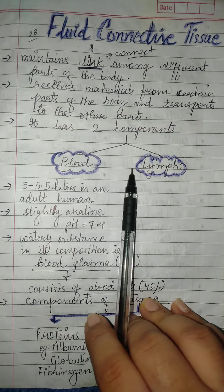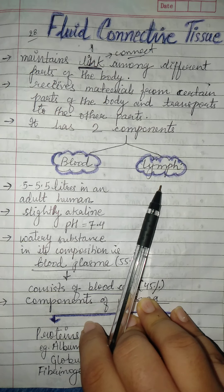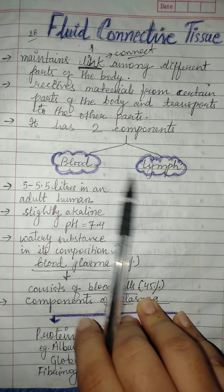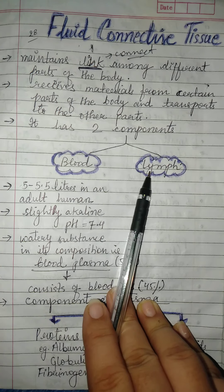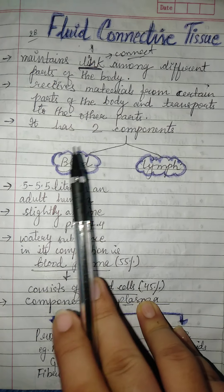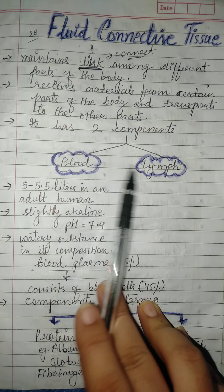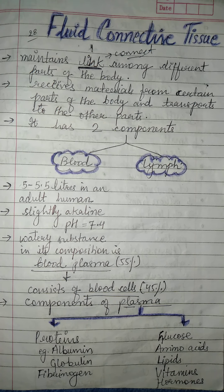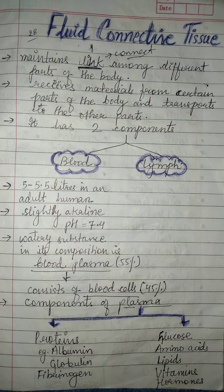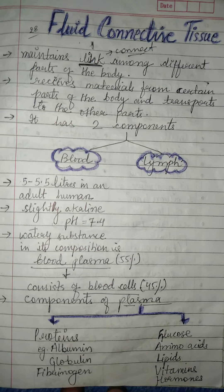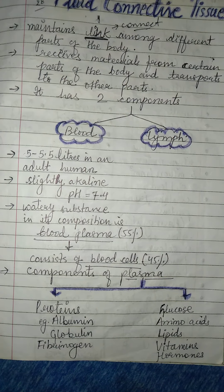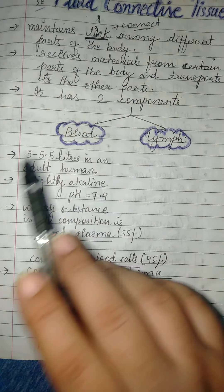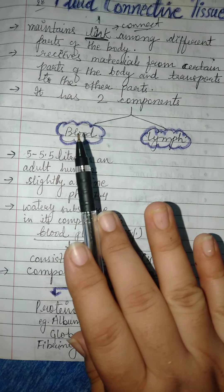So fluid connective tissue has two components — two types: one is blood and another is lymph. Both blood and lymph are fluids, but both have different colors. We will discuss them one by one. First we will proceed to blood.